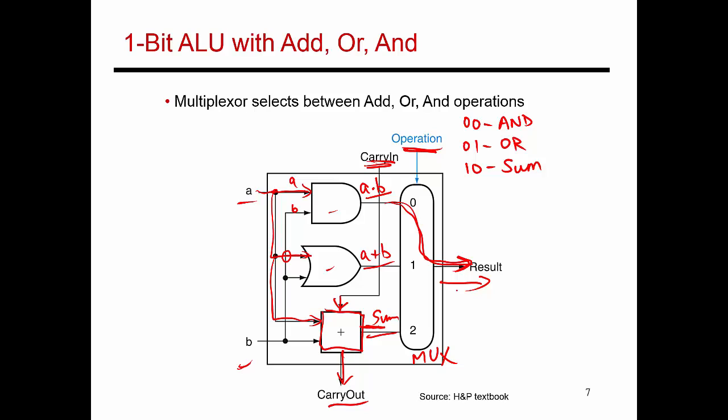This 1-bit ALU is fairly easy to design with a few gates. We've seen you just need a handful of gates to implement the adder, going through two sequential gate delays to produce a result. Similarly, the multiplexer also goes through two sequential gate delays to produce a result. So this entire circuit is very simple and capable of adding 1-bit numbers and performing these three operations.